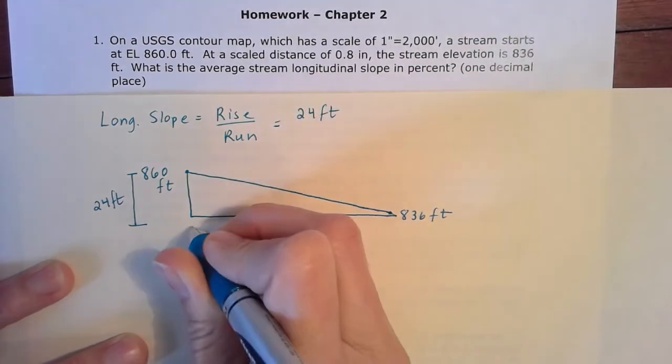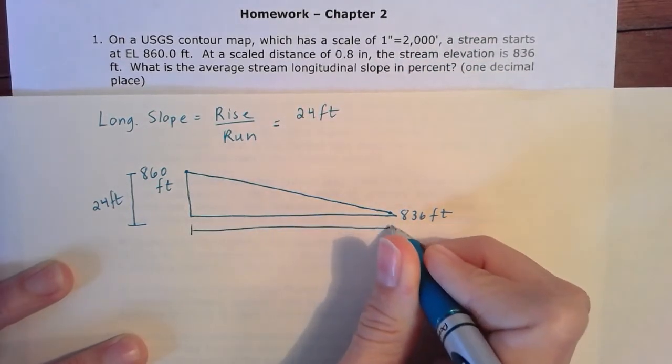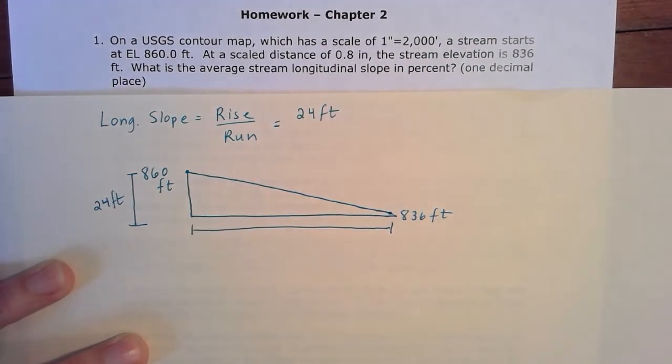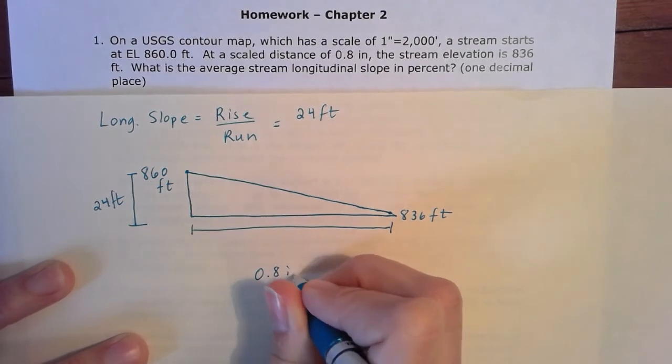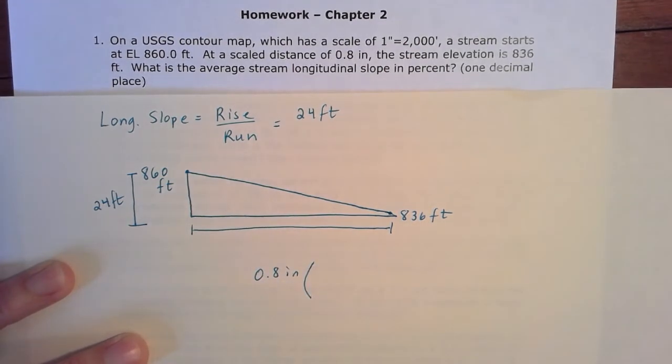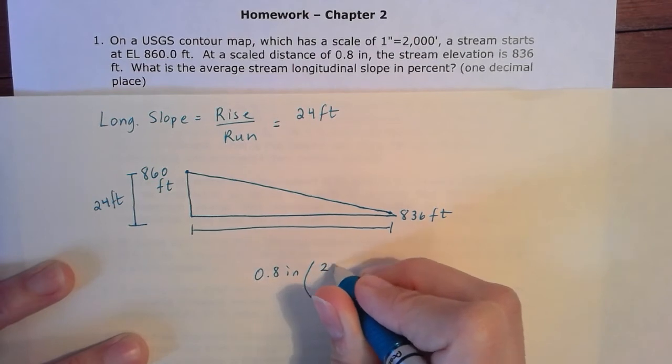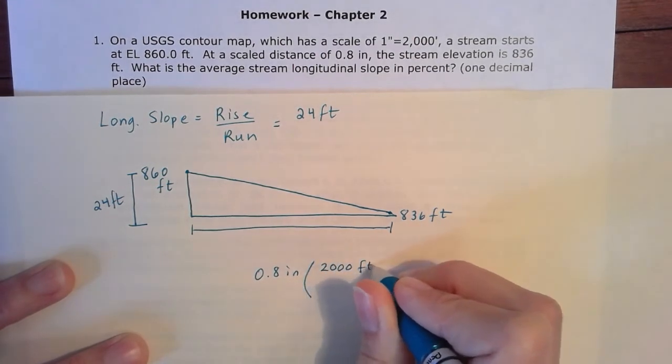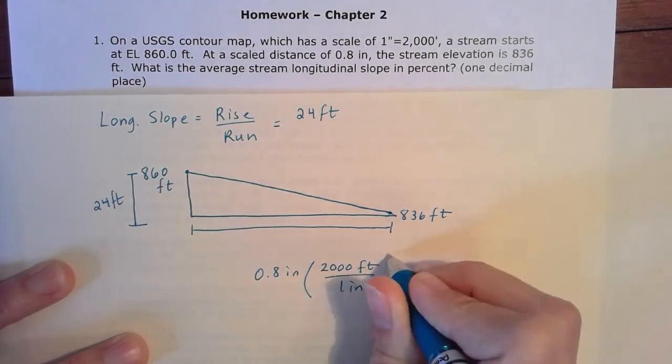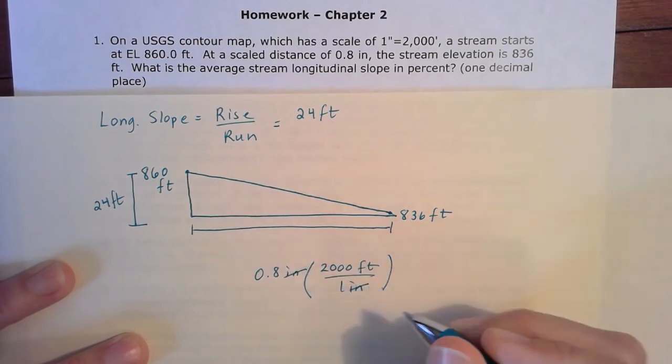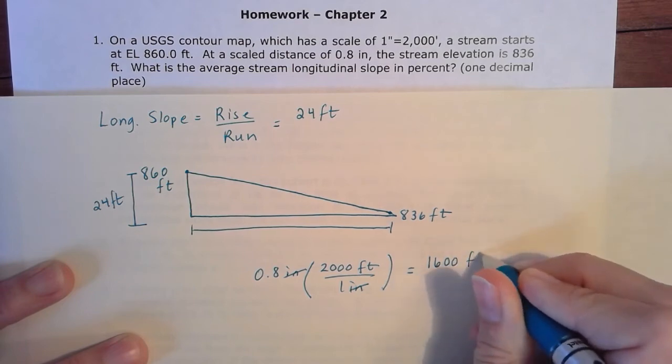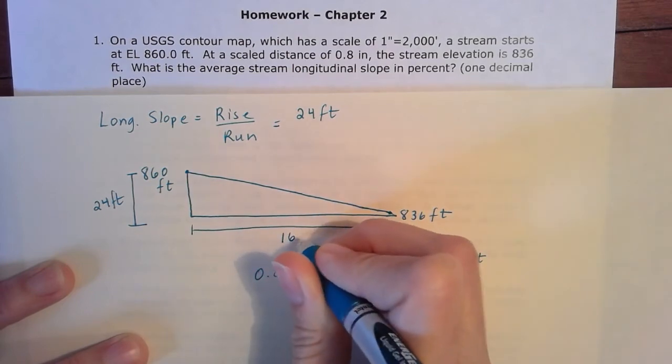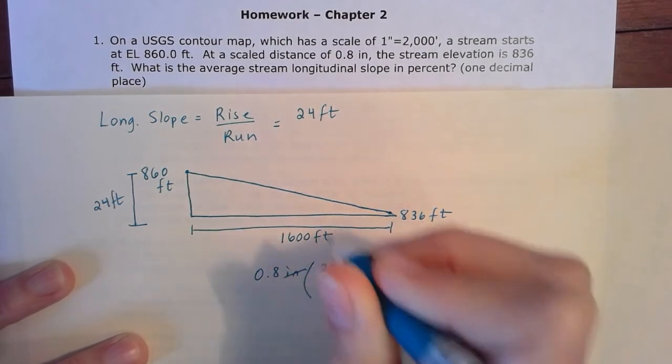And then to figure out our run, we're looking for that horizontal distance. We're told that it's 0.8 inches, but remember that's scaled. So we've got to take that 0.8 inches and multiply it by that scale factor, which is that there are 2,000 feet in one inch. So we cross those units out and we wind up that 0.8 inches is equal to 1,600 feet. So that becomes our horizontal distance, also known as our run.